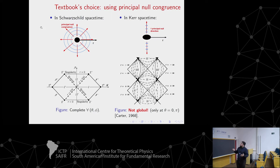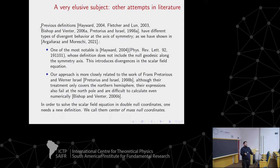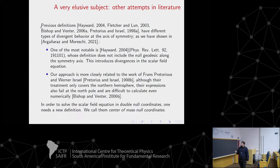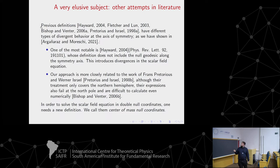We need a different null congruence to define null coordinates. If we look in the literature, we find this is a very elusive subject. There are many authors who have tried to define null coordinates - for example a Physical Review Letters article in 2004. The problem is that all these other attempts have a problem at the axis of symmetry. If you want to use those null coordinates as a tool - for example to solve the scalar field equation - you get a term with a divergence. So this is a useful tool, but when you want to use it, you face these divergent behaviors.